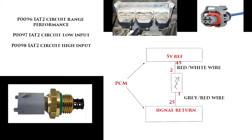So what we're going to go over today is P0096, P0097, and P0098. The P0096 is for a circuit range performance, the P0097 is a circuit low input, and the P0098 is a circuit high input.